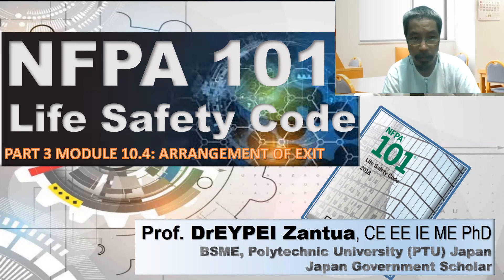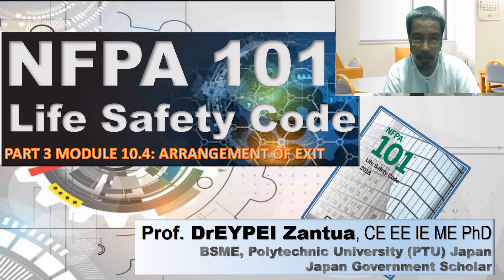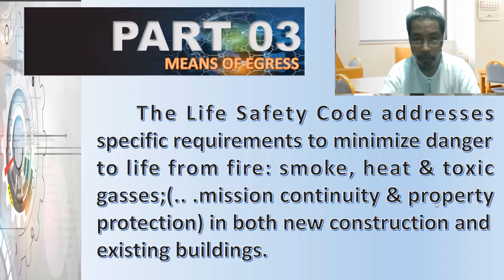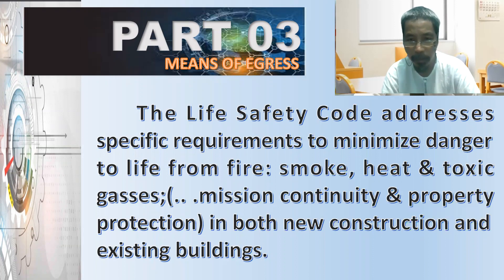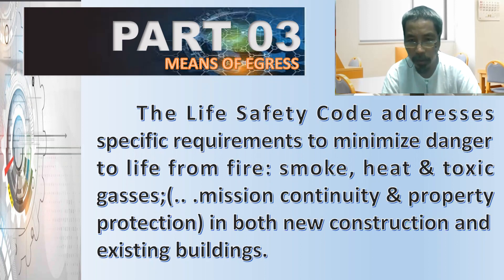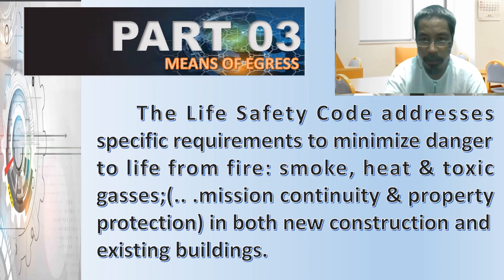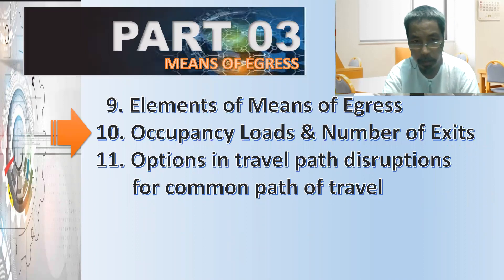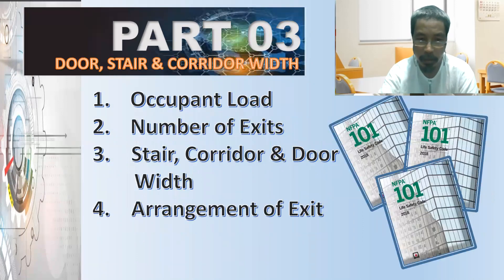In this video we'll discuss the continuation of module number 10 — we are now on the fourth sub-topic, which deals with arrangement of exits. The life safety code addresses specific requirements to minimize danger to life from fire, smoke, heat, and toxic gases, providing mission continuity and property protection in both new construction and existing buildings.